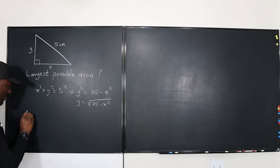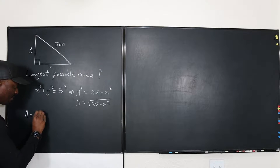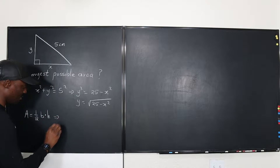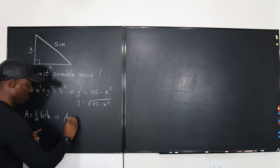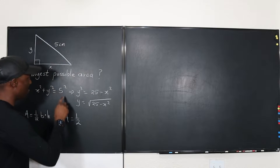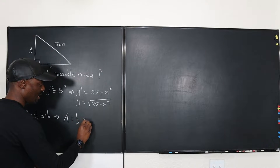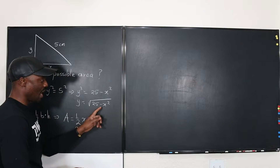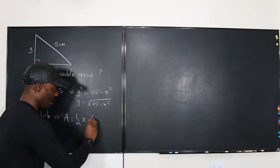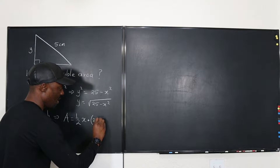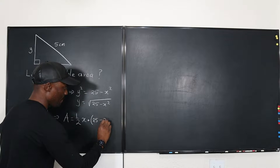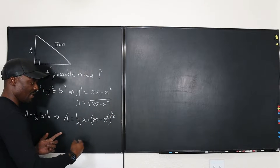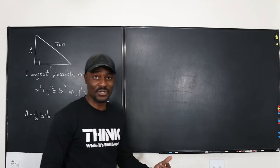Let's write the formula for the area. Remember, area is half base times height. The area we're looking for will be one half of the base x times the height y. I'm going to write y as (25 minus x squared) raised to the power one half — written in exponent form so it's easy to differentiate.